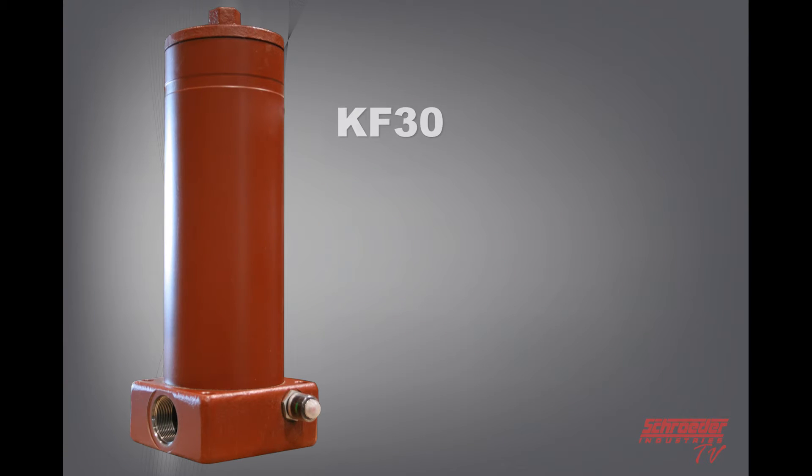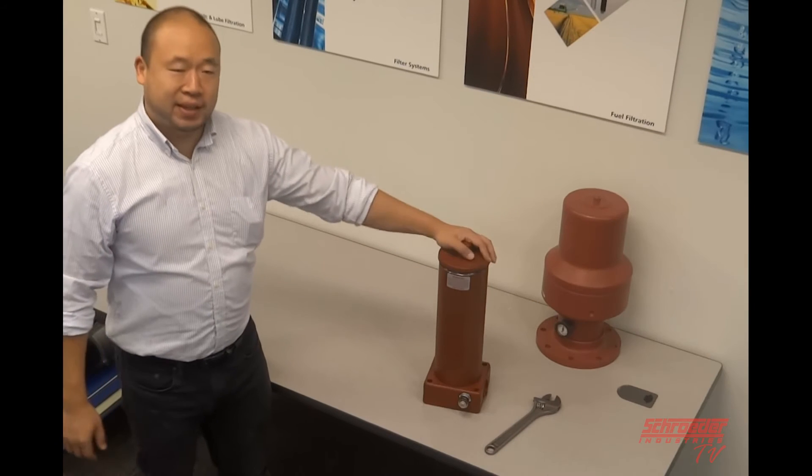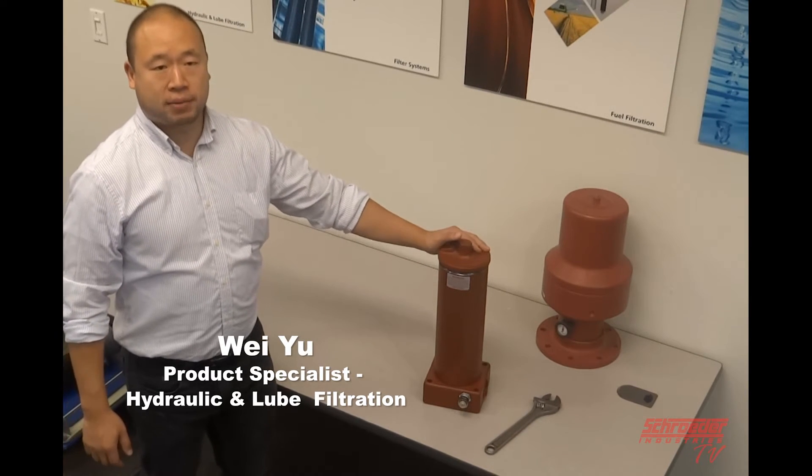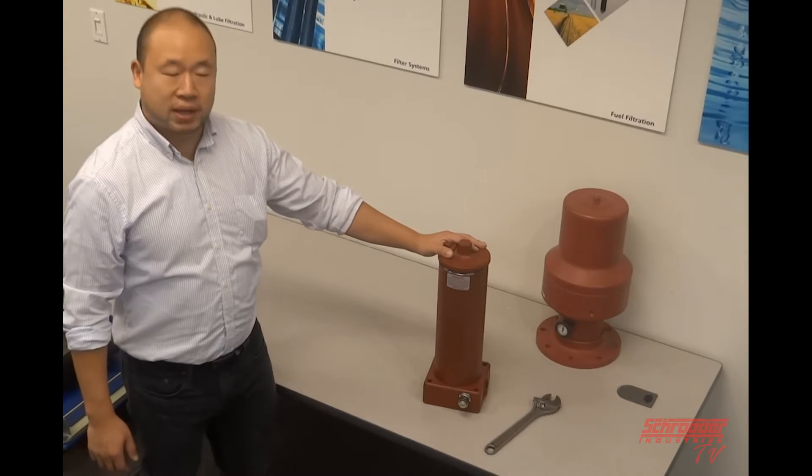The KF30 is a base ported pressure filter. It can handle flow ratings up to 100 gallons per minute and operating pressures up to 3,000 pounds. These are static operating pressures, not fatigue pressures. Today we're going to change the elements in the GKF30. This being a base ported element, there are a couple things that we do differently.